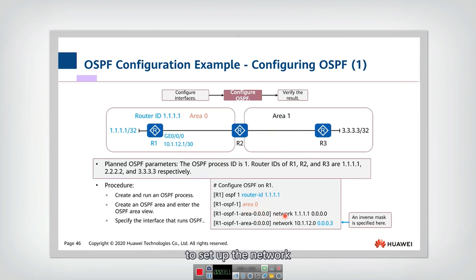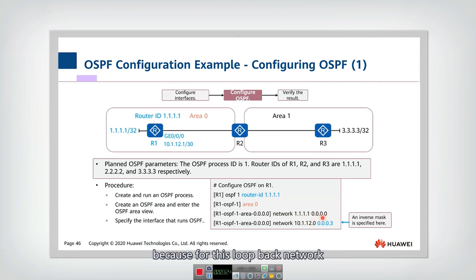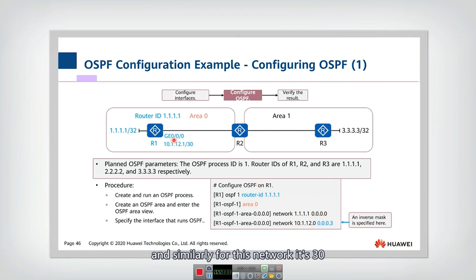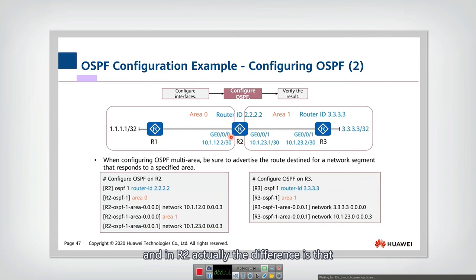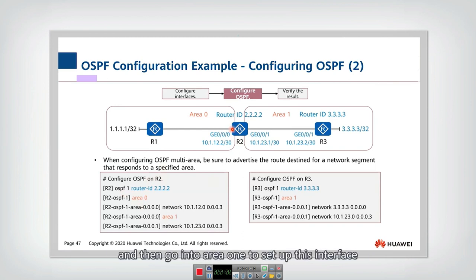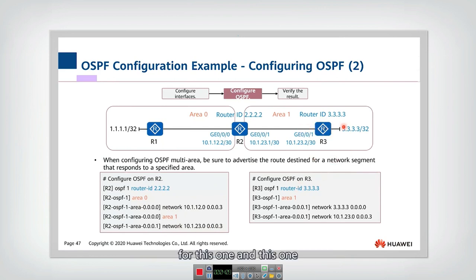We go into area 0 to set up the network ID, IP, and inverse mask. For the loopback network with a 32-bit mask, the inverse is all zeros; for a 30-bit mask, the inverse is 0.0.0.3. For R2, we configure two areas — area 0 for one connection and area 1 for another. R3 is configured similarly for its two interfaces.